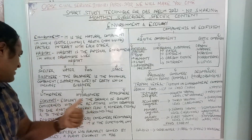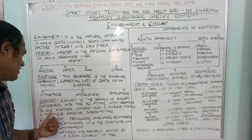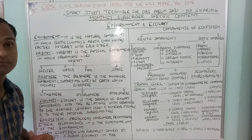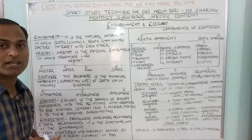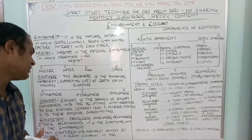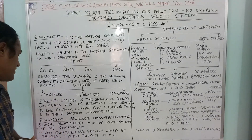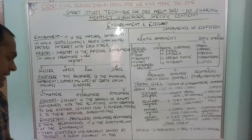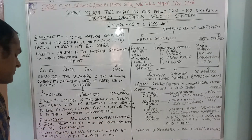Ecology is the branch of biology concerned with the relationship of organisms with one another, energy flow, and mineral cycling in relation to their physical surroundings. It covers producers, consumers, decomposers, and their relationships.